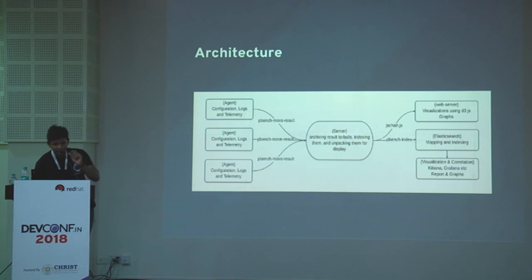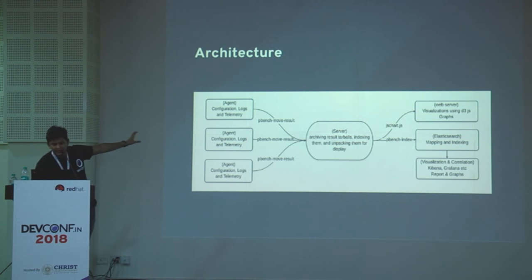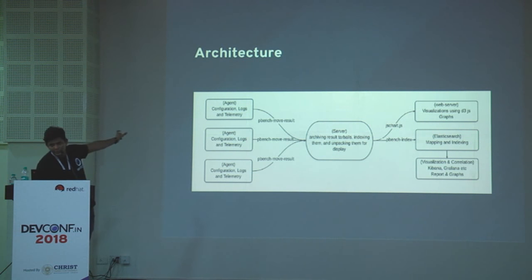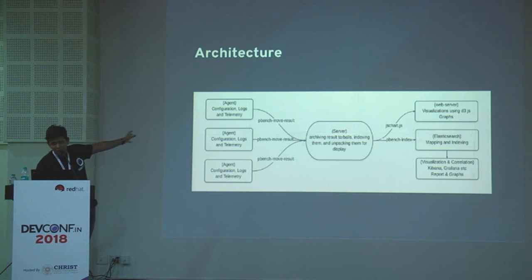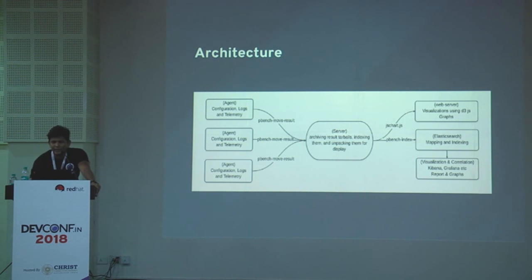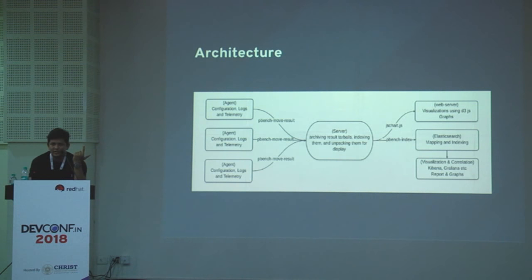Let's discuss the architecture. You can see there are different machines with agents installed that are collecting data. They send results to the server with a simple command: pbench-move-result. On the server, data goes through post-processing steps like archiving and indexing. From there it goes to two places: Elasticsearch for time series data visualizable through Kibana or Grafana, and the web server for instantly seeing results on the web interface.